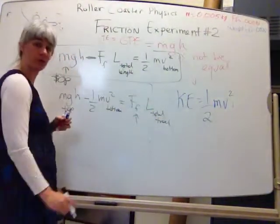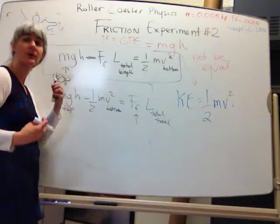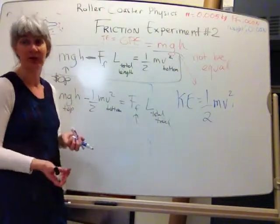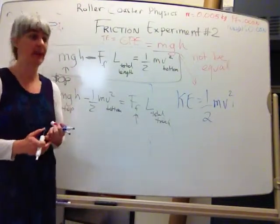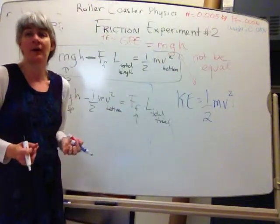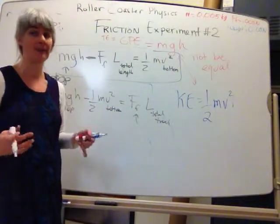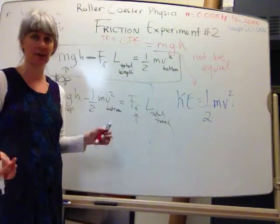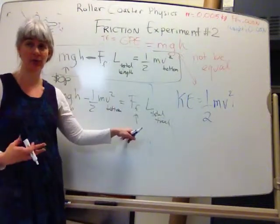You can solve this for the force of friction. That will give you the average force of friction on the track. And that's a really good number to have. It might be around the weight, it might be more than the weight, it might be less than the weight, but it will definitely give you the average force of friction.